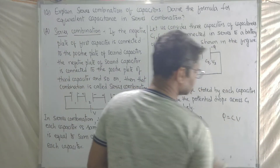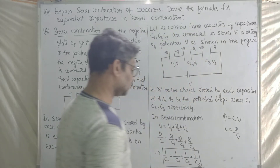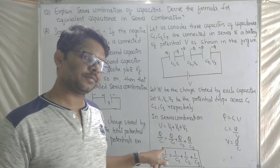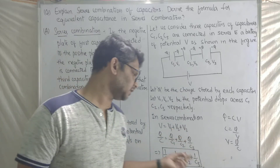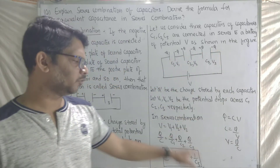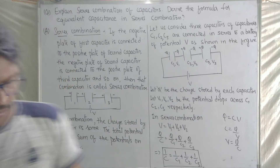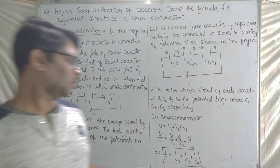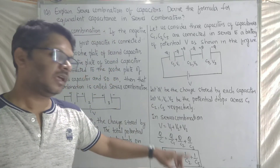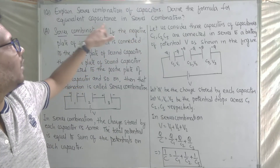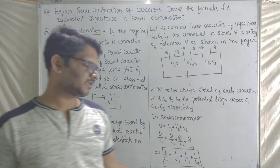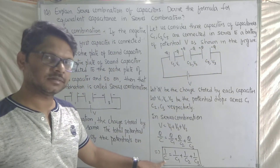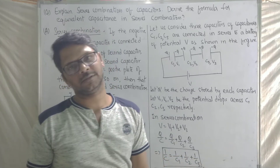Using Q = CV, we get C = Q/V, so V = Q/C. Therefore V1 = Q/C1, V2 = Q/C2, V3 = Q/C3. Substituting into V = V1 + V2 + V3 and cancelling Q throughout, we get: 1/C = 1/C1 + 1/C2 + 1/C3. This is the formula for equivalent capacitance in series combination.